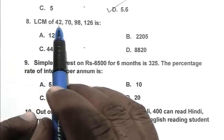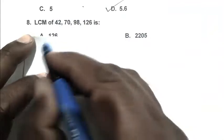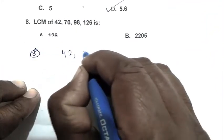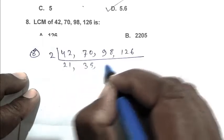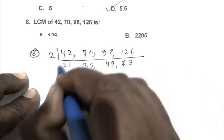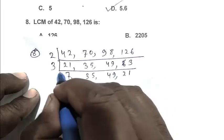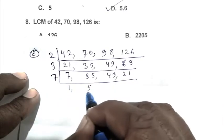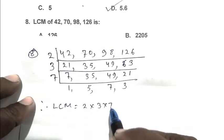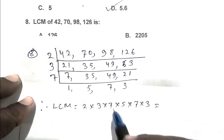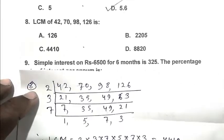Question number 8, LCM of 42, 70, 98, 126. We calculate the LCM: 42, 70, 98, 126. First divide by 2: 21, 35, 49, 63. Then by 3: 7, 35, 49, 21. Again by 7: 1, 5, 7, 3. Therefore, LCM equals 2 multiplied by 3 multiplied by 7 multiplied by 5 multiplied by 7 multiplied by 3, which equals 21 into 21, that is 4410. So, C is the right answer.